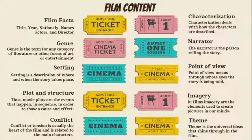D: Plot and structure — the narrative sequence of events that determines the outcome of the characters. Movie plots are the events that happen in sequence in order to show cause and effect. E: Conflict — conflict, or tension, is usually the heart of the film and is related to the main characters.